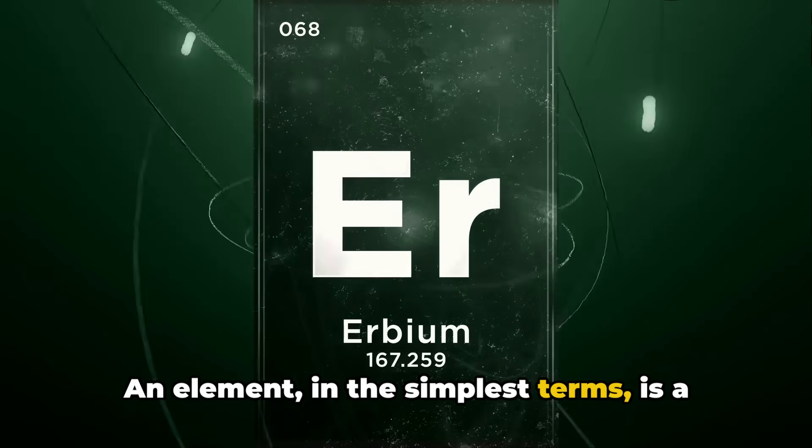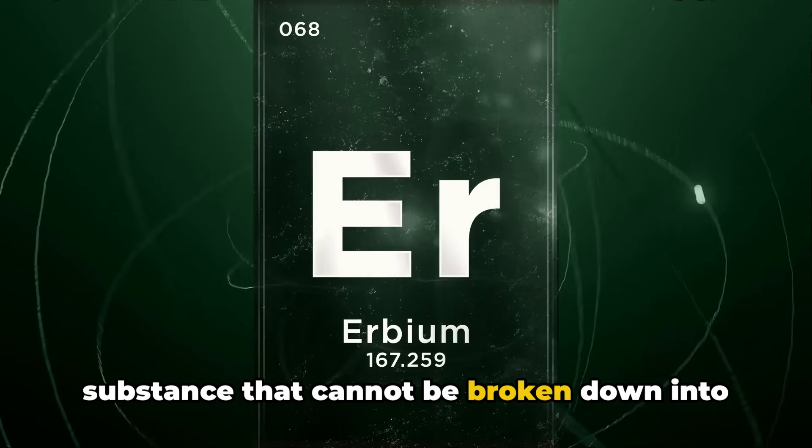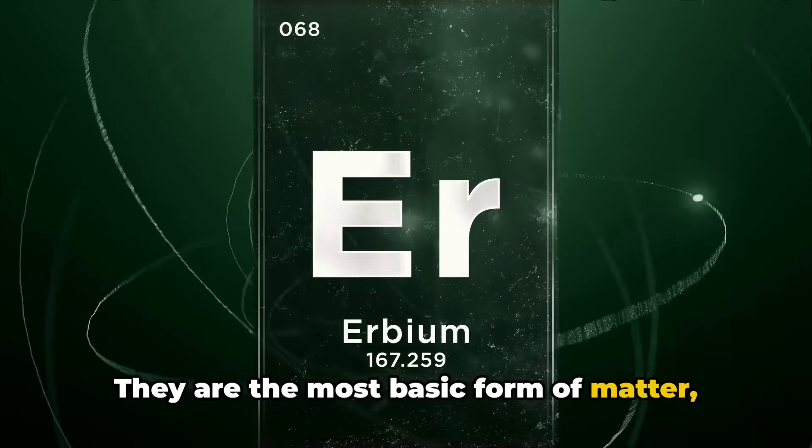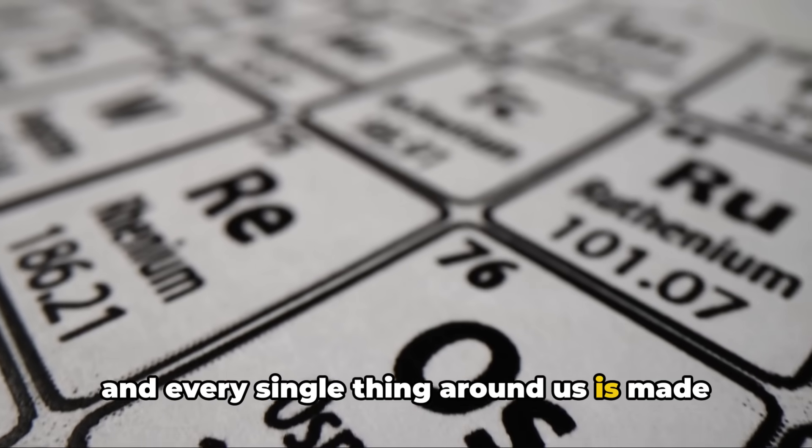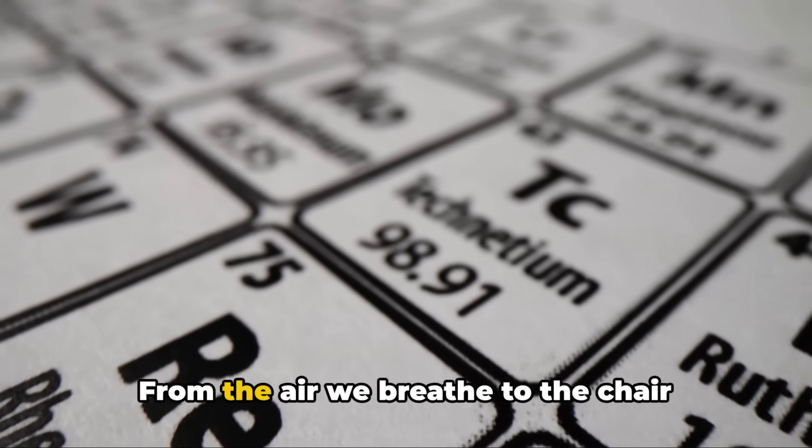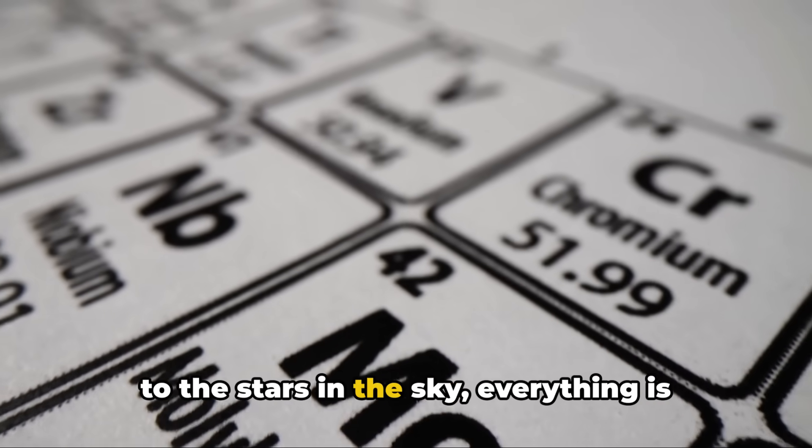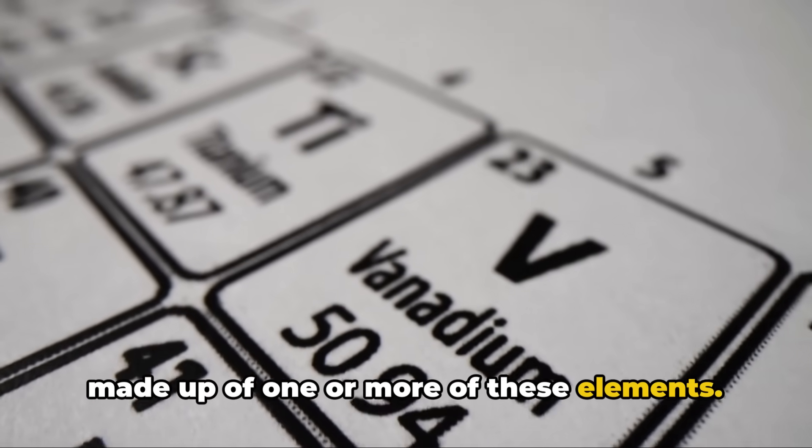An element, in the simplest terms, is a substance that cannot be broken down into simpler substances. They are the most basic form of matter, and every single thing around us is made from these elements. From the air we breathe to the chair you're sitting on, from the water we drink to the stars in the sky, everything is made up of one or more of these elements.